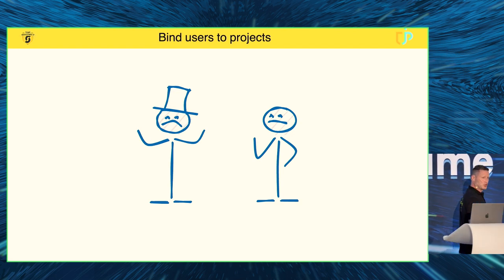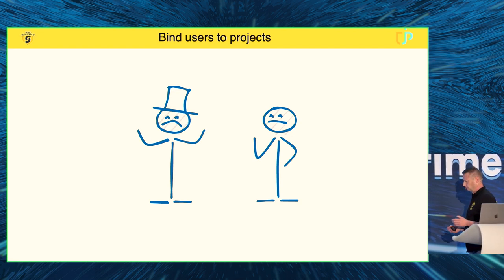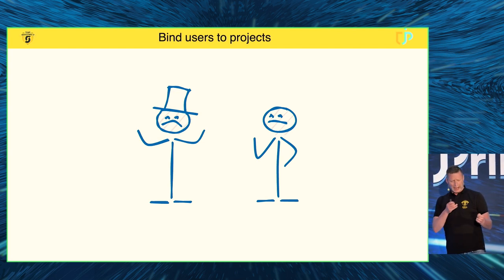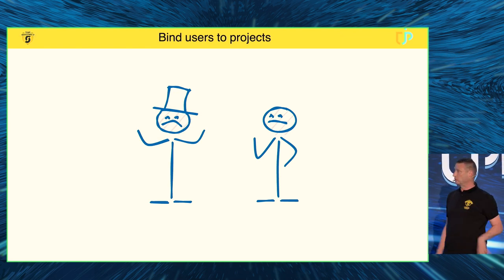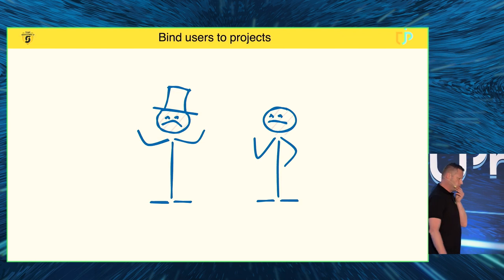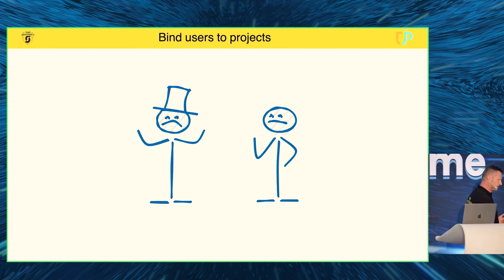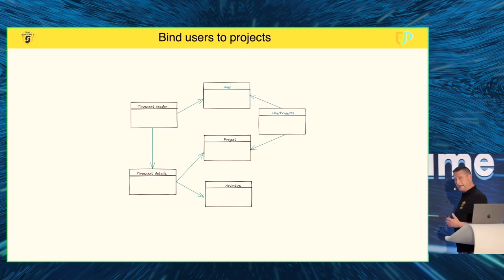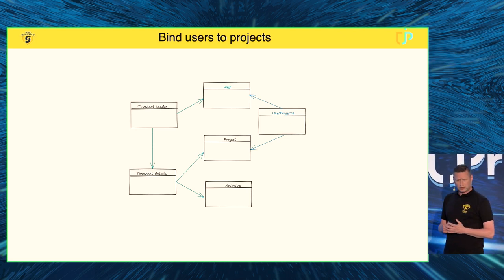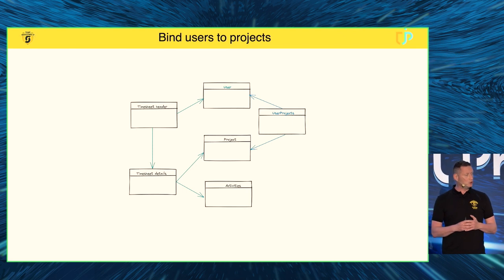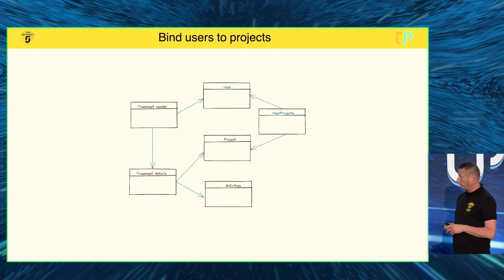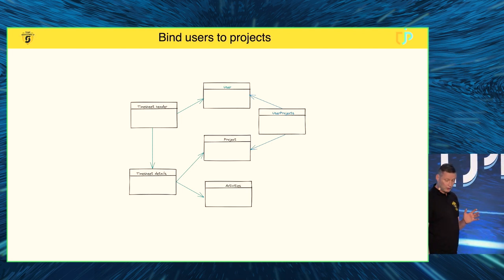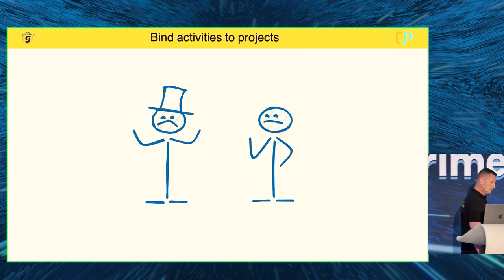Then the project manager comes one day and says, 'Something must be wrong in the system — someone who wasn't attached to one of my projects actually registered hours to it.' Victor looks at the code and finds that any user can book on any project. So Victor comes up with a smart solution and adds something in between to authorize which users are allowed for which project.